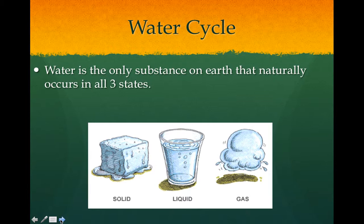and solid. So water is the only substance on the planet that naturally occurs in all three states. We have ice up at the ice caps, the North and South Pole. We have liquid forms in the oceans and lakes and rivers, and then we have the gaseous form in the atmosphere.